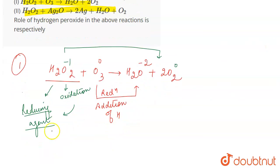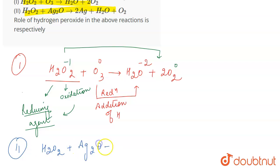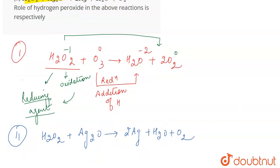In the second reaction, H₂O₂ + Ag₂O gives 2Ag + H₂O + O₂. In Ag₂O, silver is in the plus 1 oxidation state and oxygen is in the minus 2 oxidation state. When it is converted to Ag in the elemental state, silver is in the 0 oxidation state.